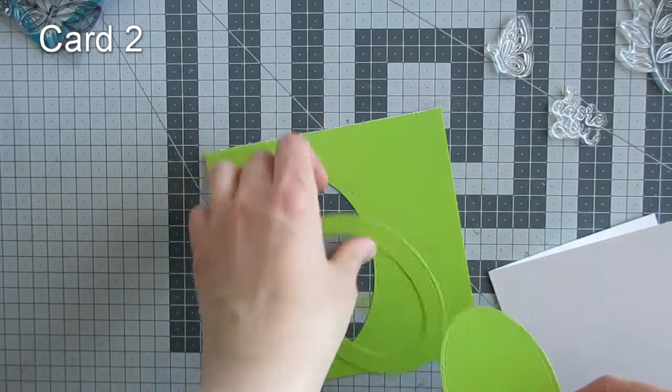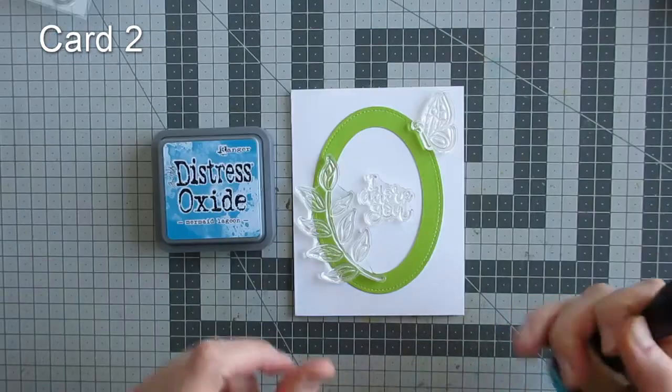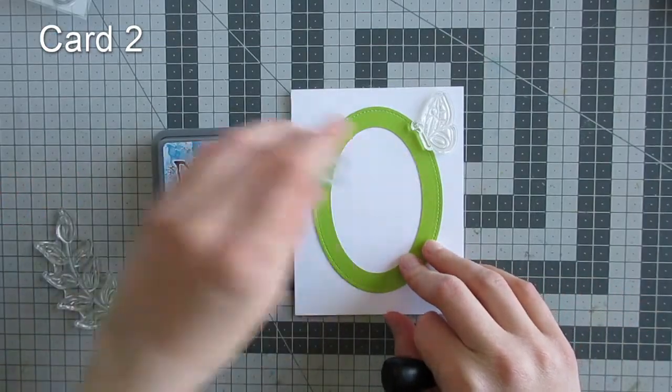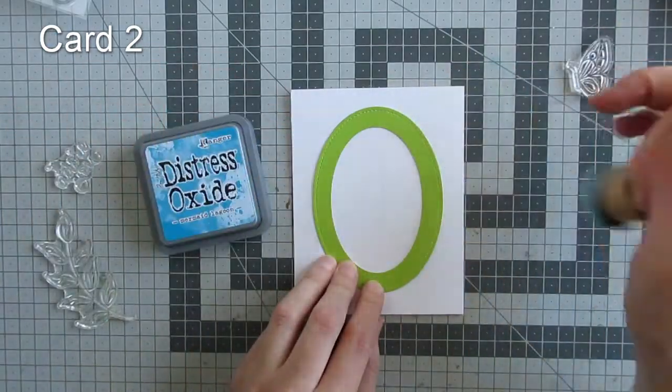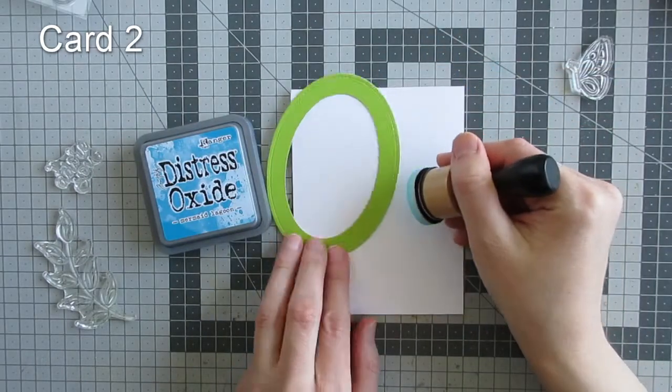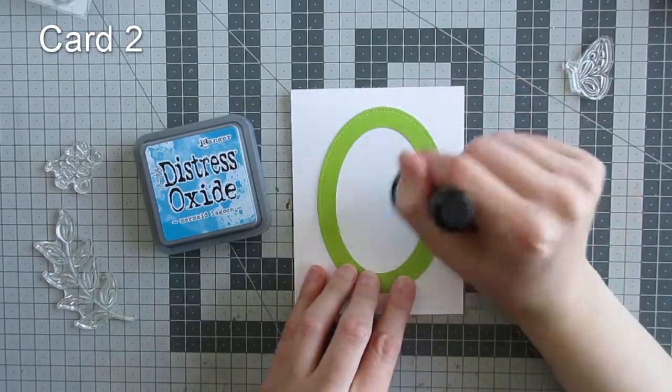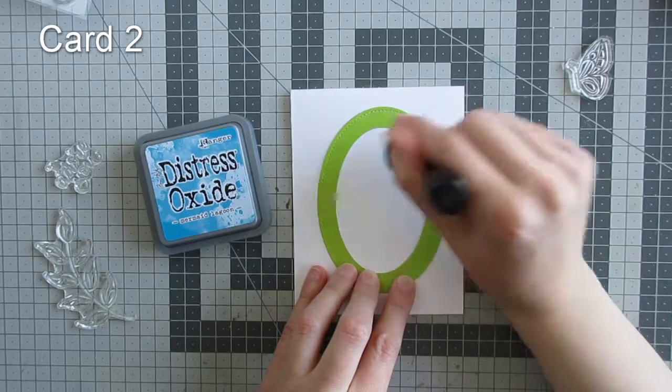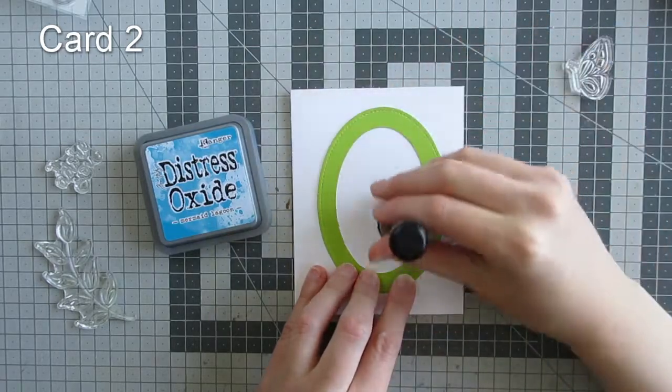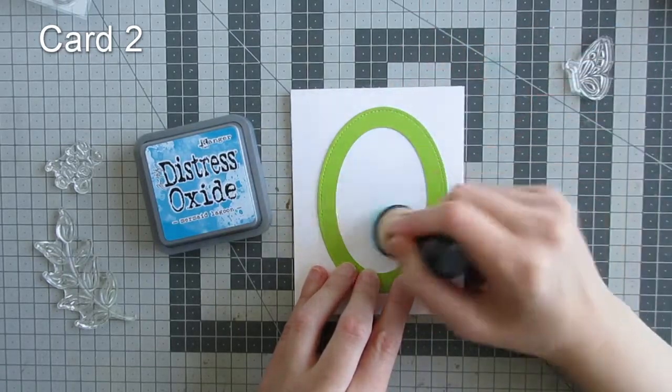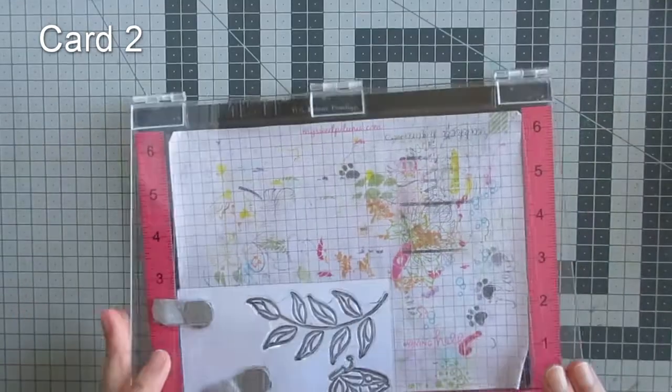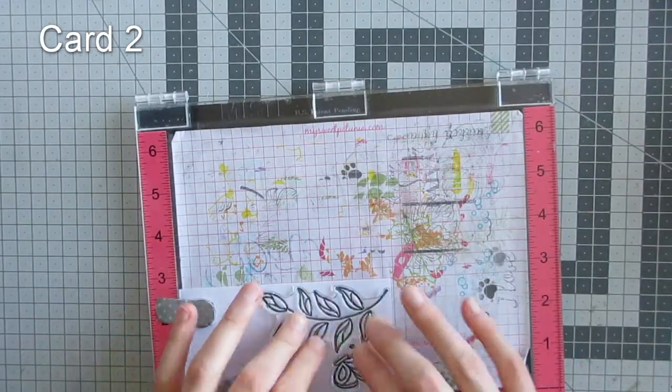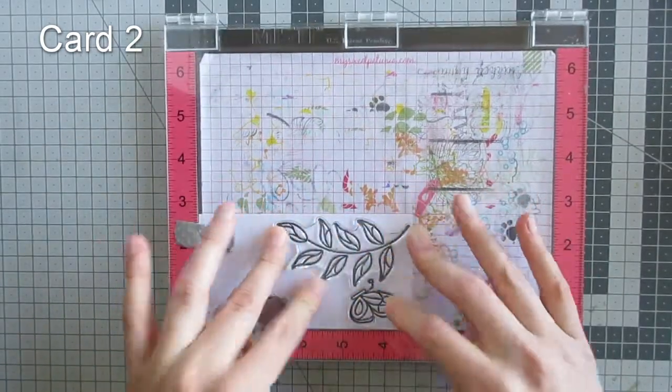I laid the frame onto my white card base made with Simon Says Stamp 120-pound cardstock that came with the kit, and I'm using Mermaid Lagoon Distress Oxide ink to add some light ink blending to the center of the oval area.